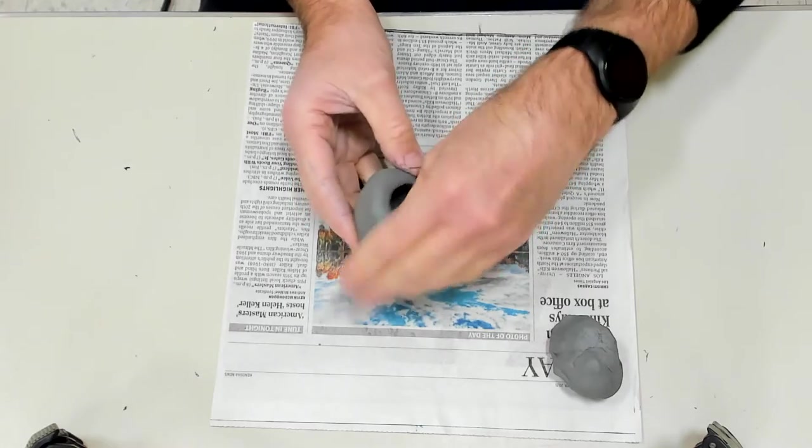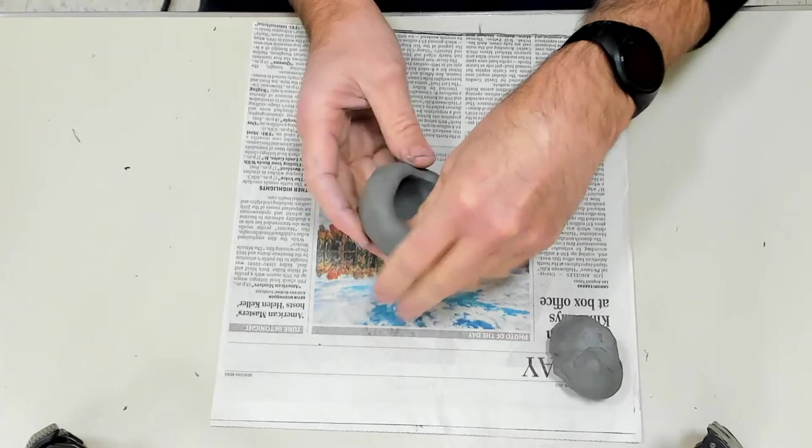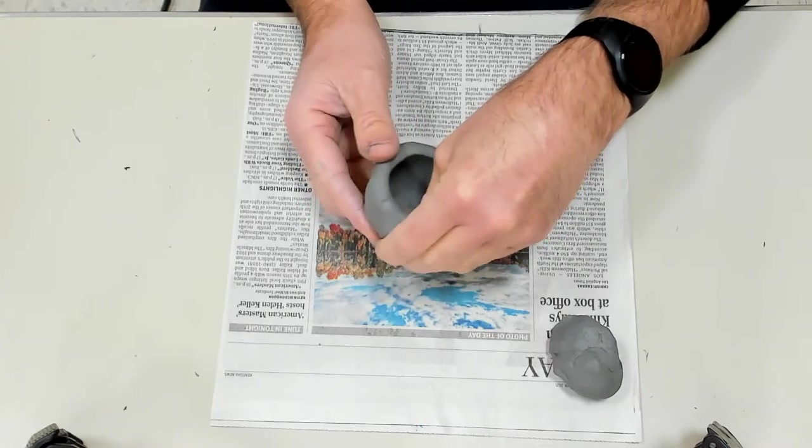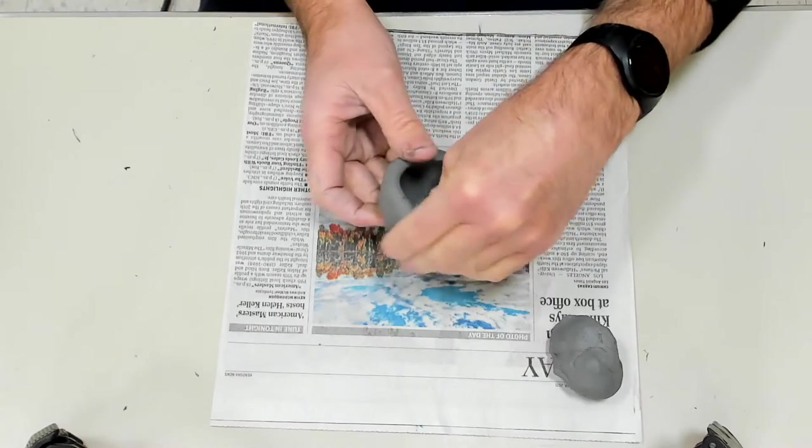If you go too fast it's going to get lumpy. Don't make it too thin either because it has to be able to support all these parts.